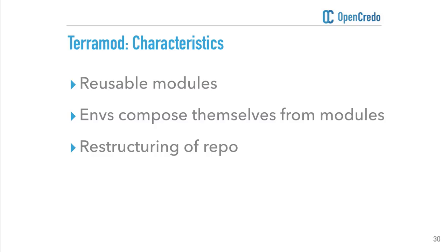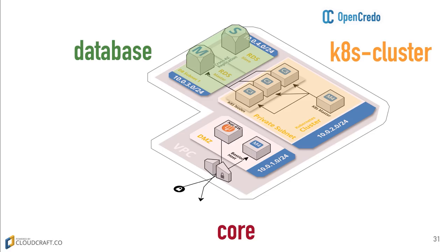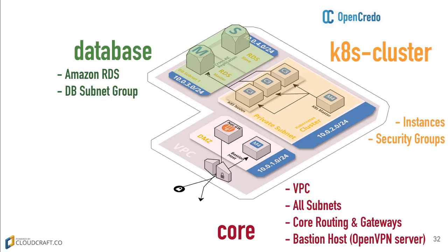We're also going to change the repository structure. Terri has decided to break her modules up into three main areas: a core area — the fundamental Amazon structure like VPCs, subnets, and bastion host; a Kubernetes cluster area; and a database area. In terms of structure, in the single repository we now have an environments directory with test and prod areas, and a separate modules area. Underneath modules we define the three logical components: database, core, and Kubernetes.